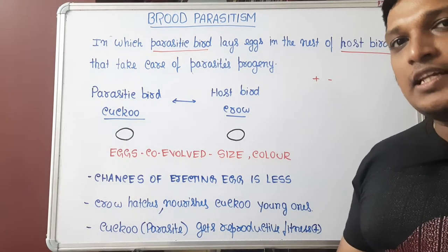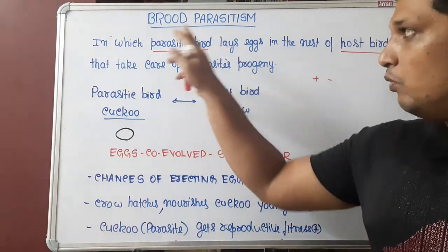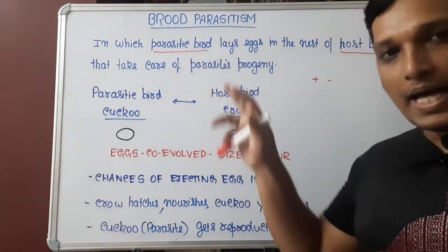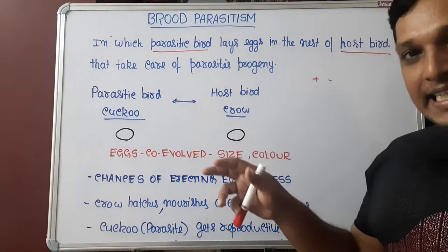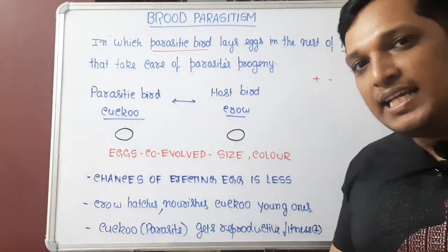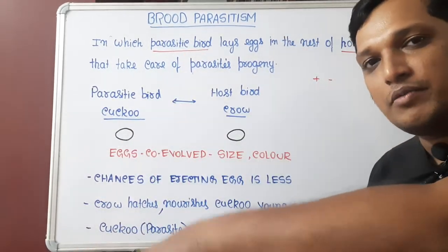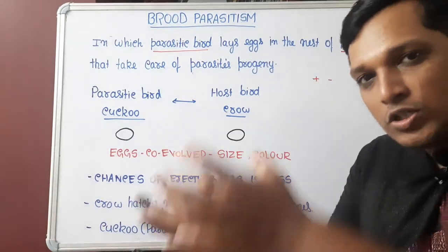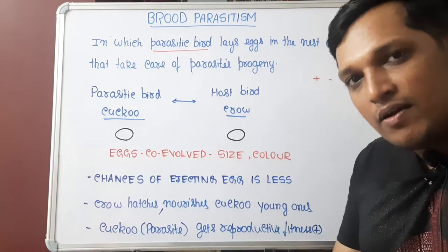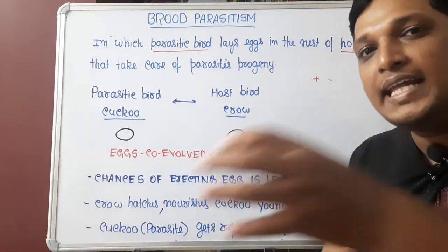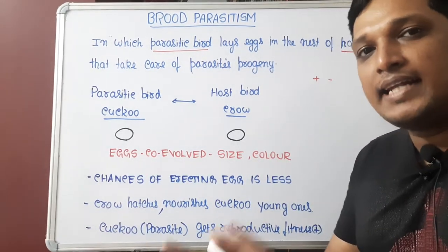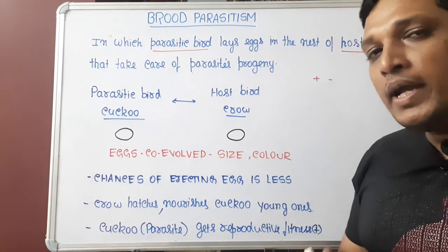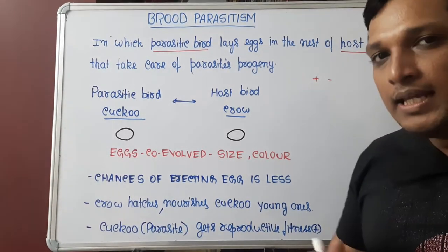What is brood parasitism? It is commonly seen in birds, whereby one bird, regarded as a parasitic bird, lays its egg in the nest of another bird, regarded as the host. The host bird incubates the egg of the parasitic bird, hatches it, and takes care of the young one of the parasitic bird.